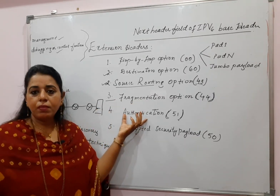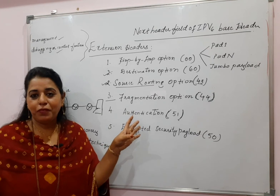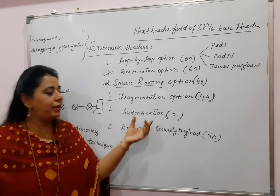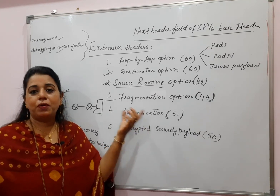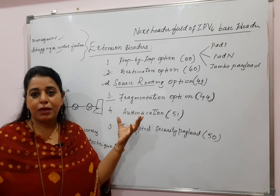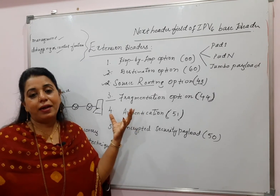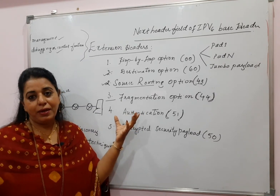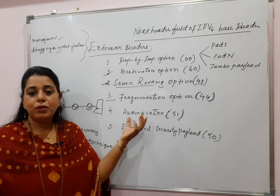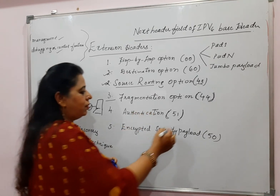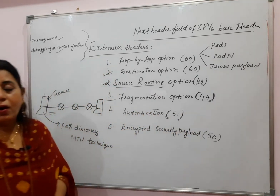Authentication is included in IPv6, whereas it was not present in IPv4. It serves two main purposes: first, it verifies that the sender is genuine, and second, it ensures the content of the message is intact and has not been corrupted.